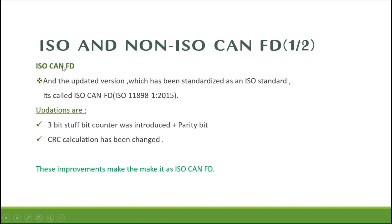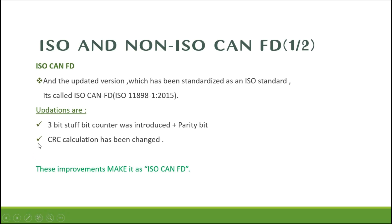The next version is ISO CAN FD. The security issues from the original version have been fixed and standardized by ISO, and it was released in 2015, known as ISO CAN FD — ISO 11898. The key updates include a 3-bit stuff bit counter and a parity bit, and the cyclic redundancy check (CRC) processing has been changed. These improvements make it ISO CAN FD.